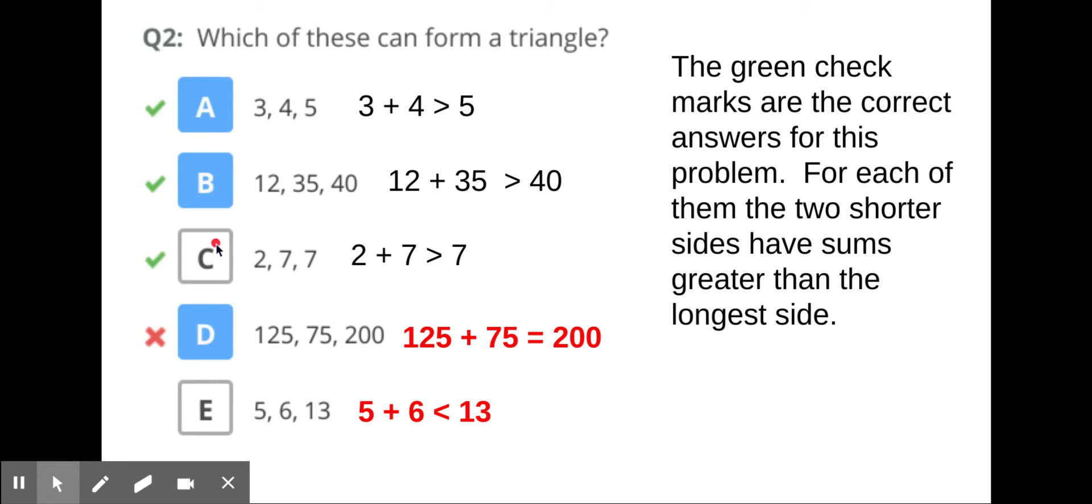is 200. 200 equals 200, so like the previous problem you have a straight line - those two sides would be lying right on the 200 side. As for number E, it doesn't work because 5 plus 6 is 11 and 11 is less than 13.